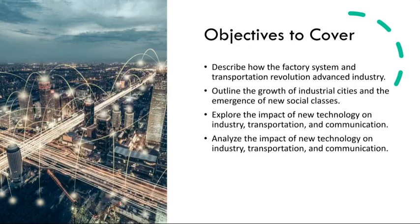Simultaneously, the transportation revolution marked the development of canals, railroads, and steamships, which facilitated the movement of goods and people at an unprecedented scale. The construction of canals like the Erie Canal and the advancement of railroads revolutionized transportation, connecting distant regions and enabling faster and more cost-effective movement of raw materials and finished products. This advancement in transportation was a catalyst for economic expansion and trade.